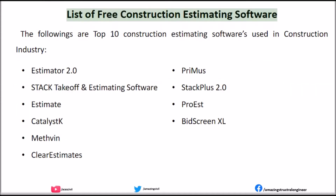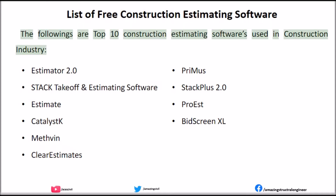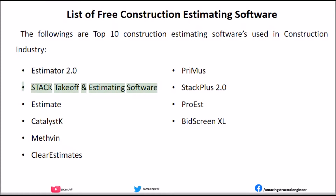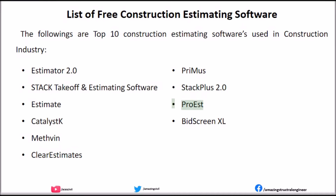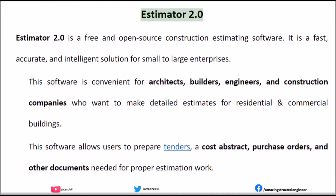The following are the Top 10 Construction Estimating Softwares used in the construction industry: Estimator 2.0, Stack Takeoff and Estimating Software, Estimate, Catalyst-K, Methvin, Clear Estimates, Primus, Stack Plus 2.0, ProEST, and Bid Screen XL.